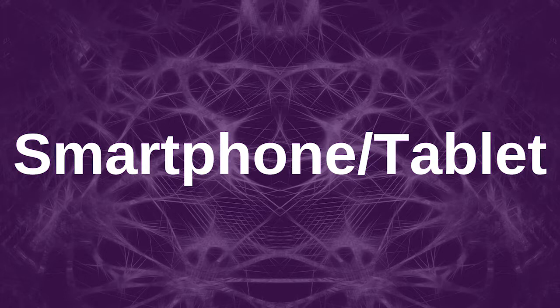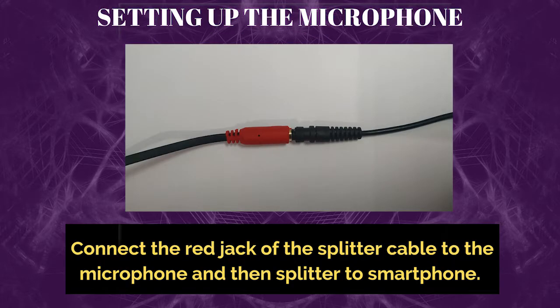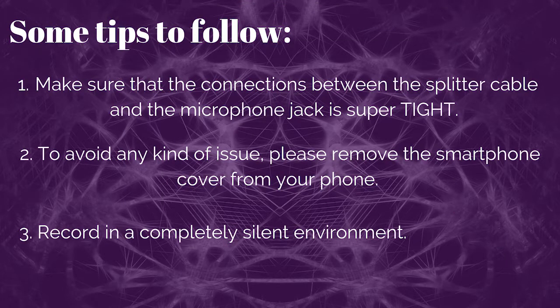Smartphone and Tablet. This microphone is especially designed to be used by smartphones and tablets. Before using it, you must decide: do you want to record audio, or do you want to record video along with the audio? In order to set up the microphone, you need to connect the red jack of the microphone splitter cable — which you must have received with the packet — to the microphone jack itself. You must ensure that the connection between the splitter cable and the microphone jack is super tight.